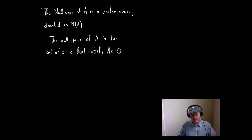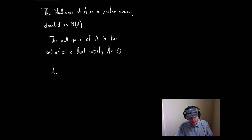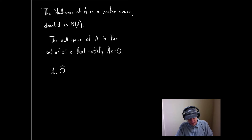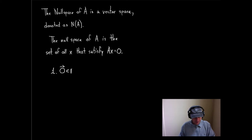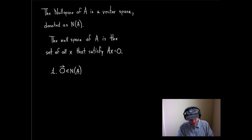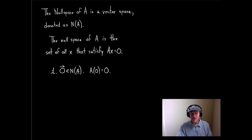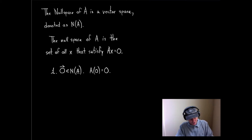Now, to show this is a space, we have to show three things. Number one: we have to show that the zero vector is in the space. Well, my space is the null space of A, and it has to be, because if you take A and multiply it by 0, the result is 0. So we know that 0 satisfies our solution — 0 is in the null space of A.